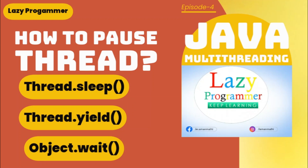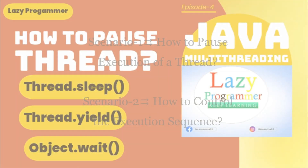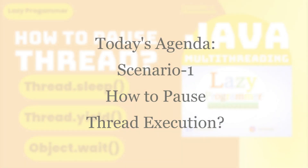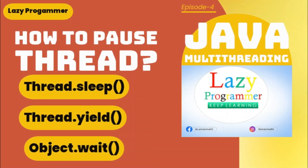In the previous video, I presented two scenarios. One, where we need to see how to pause the execution of the currently running thread, and second was to control the execution sequence to some extent. I hope you might have already tried it on your own. Still, if it is pending, we will take care of one of those scenarios in today's session. Without any further delay, let's start.